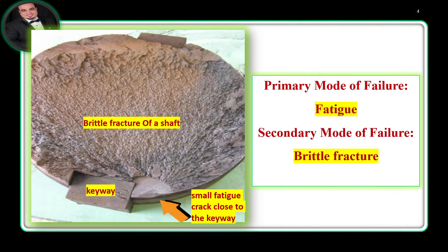It may be a straight brittle fracture or a secondary mode of failure. For example, brittle fracture of a shaft caused by a small fatigue crack close to the keyway — the fatigue would be expected to start at the keyway root but actually began at a surface defect.